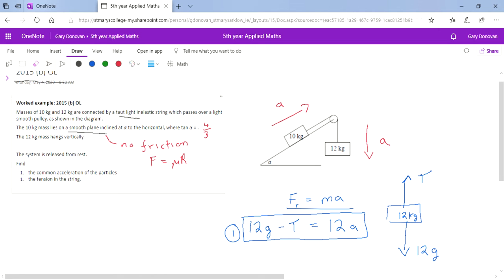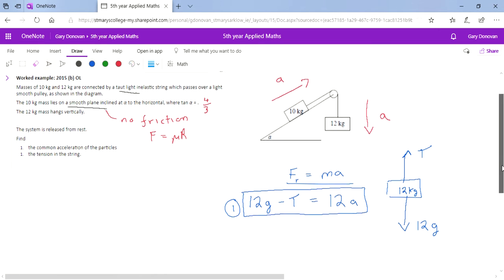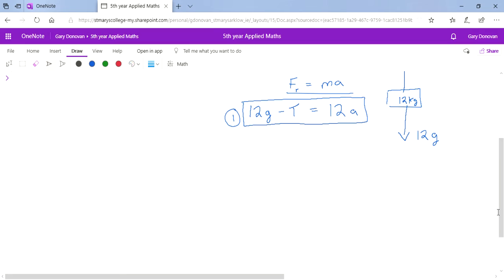Now equation two gets a bit trickier. Well, the equation itself isn't trickier, but just finding the forces. Let's do our force diagram for the 10 kg mass. The only force we can see acting on it is the string, which is the tension pulling it this way. But it also experiences the force due to gravity. And gravity always acts straight down. So that's its gravity, 10 times g.